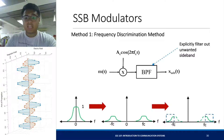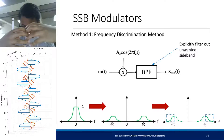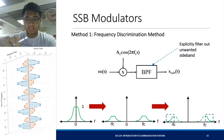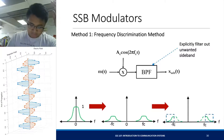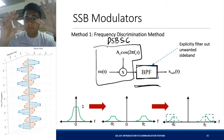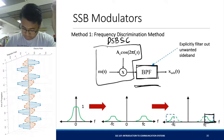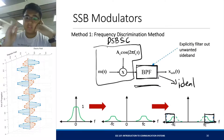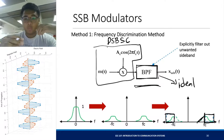How do we produce your single sideband signal? The first method is the frequency discrimination method: use a bandpass filter to explicitly filter out the unwanted sideband. You start from your DSBSC signal and pass it through a bandpass filter to select the desired sideband — for example, the upper sideband. The problem with this implementation is that there is no such thing as an ideal bandpass filter. Without an ideal bandpass filter, you won't be able to completely cut off the lower sideband.